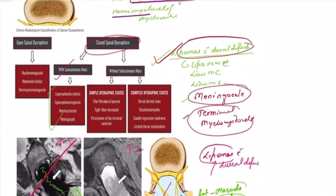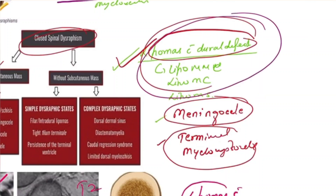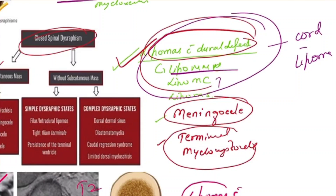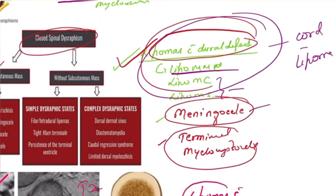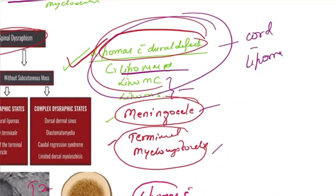In non-terminal myelocystocele, the posterior wall of the syringohydromyelic cavity herniates through the spina bifida into the meningocele, with the anterior wall of the spinal cord remaining in the vertebral canal. To summarize: in lipoma with dural defect, identify the cord-lipoma interface — outside the canal is lipomyelomeningocele, within the canal is lipomyelocele or lipomyelocystis. Meningocele has no neural herniation; myelocystocele combines a meningocele with a hydromyelic cavity of the low-lying cord. See you in part two.